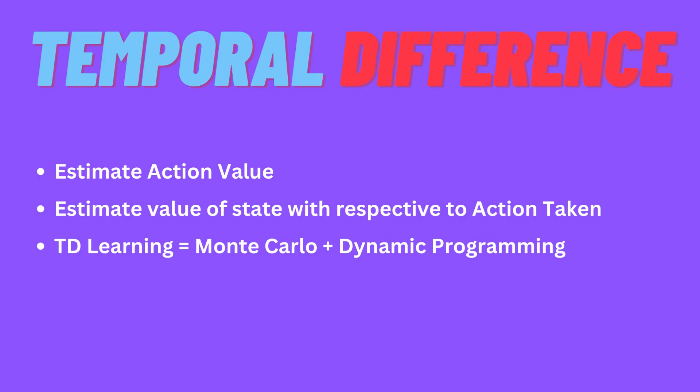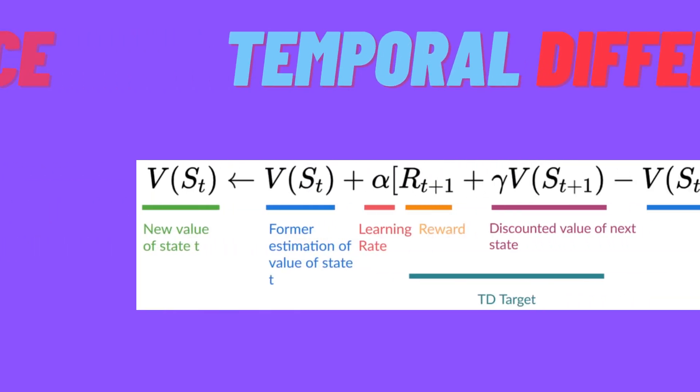In Monte Carlo, you wait for a full trajectory to change and update the state. In Temporal Difference Learning, we update state values at every step — this is called online learning. We don't need to wait for the end of a trajectory to update our value estimates.